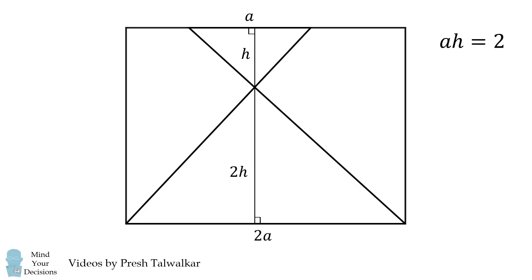Now go back to the rectangle. We can solve for one of its side lengths. It'll be equal to h plus 2h. Therefore, this side length will be 3h. The other side length is 2a.